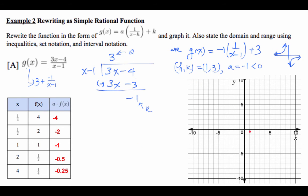Using h, k = 1, 3, draw the intersection of the vertical and horizontal asymptotes. Then use the table of values to plot the points. Personally, 3 points is good enough, though 5 is safer. Connect the points, and that's what the graph looks like.